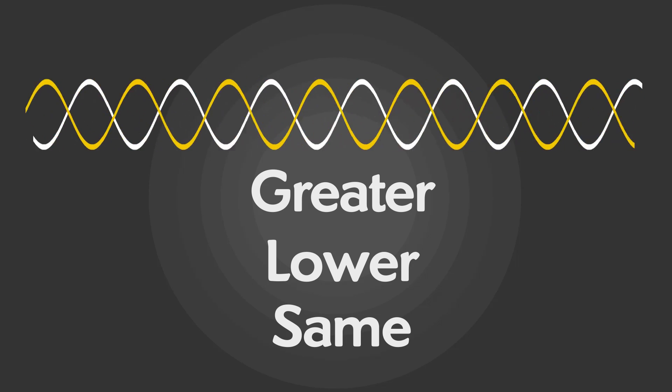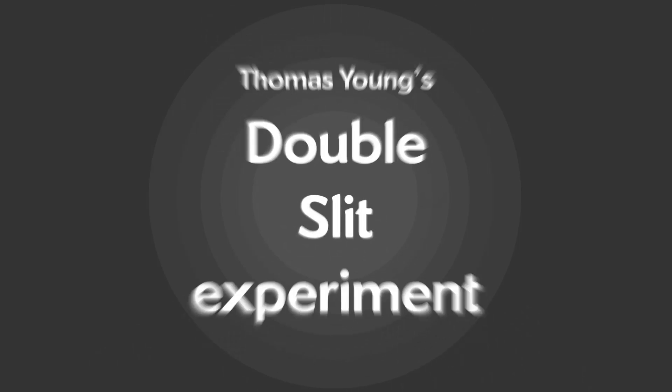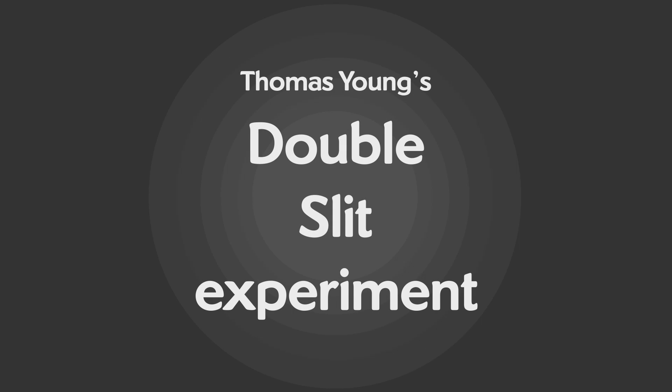Interference of light can be explained much better by Thomas Young's double slit experiment. In 1801, Thomas Young performed an experiment that strongly inferred the wave-like nature of light.